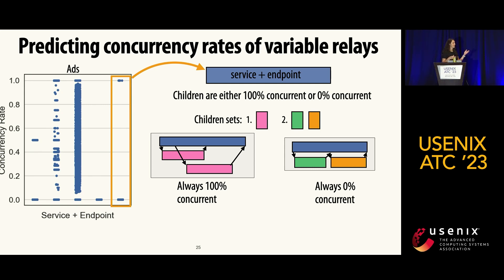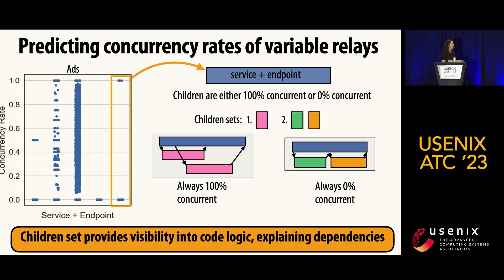For example, pink might be calls to caches, which have no dependencies between them, whereas green and orange might be a key server where you need that key as input to a database call. When we grouped all invocations by their children set, it decreased variation in concurrency rates by a significant amount. The takeaway is that children set can help provide visibility into code logic by explaining dependencies.